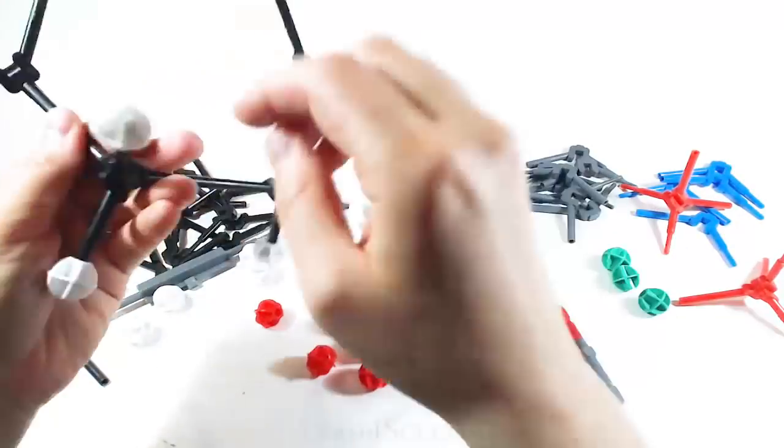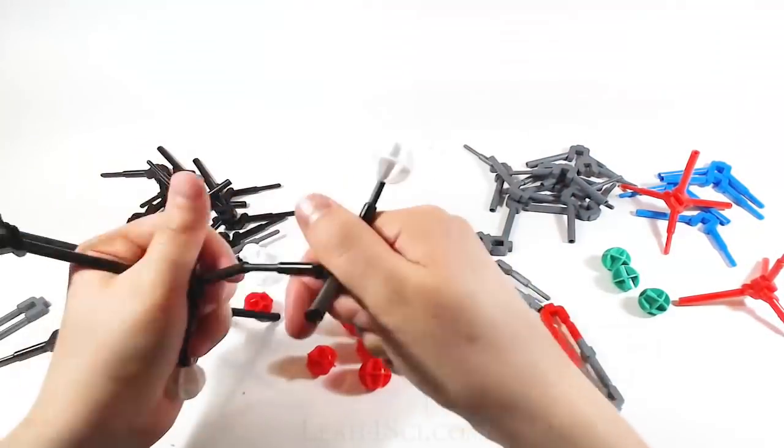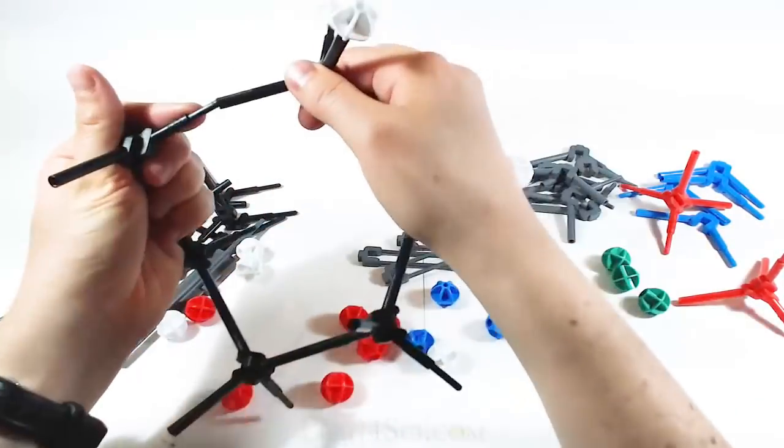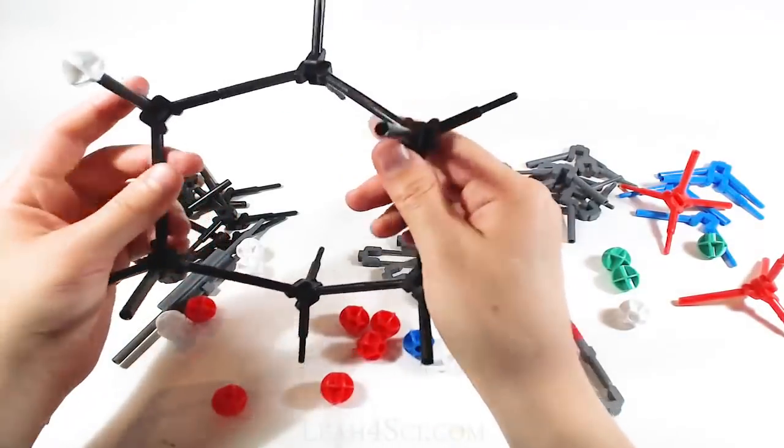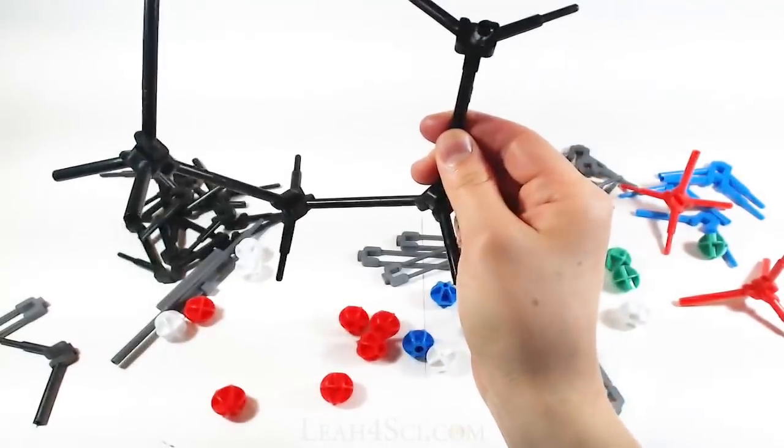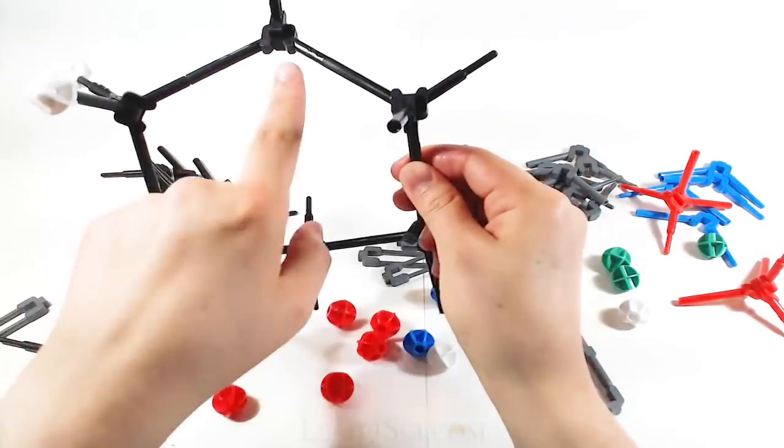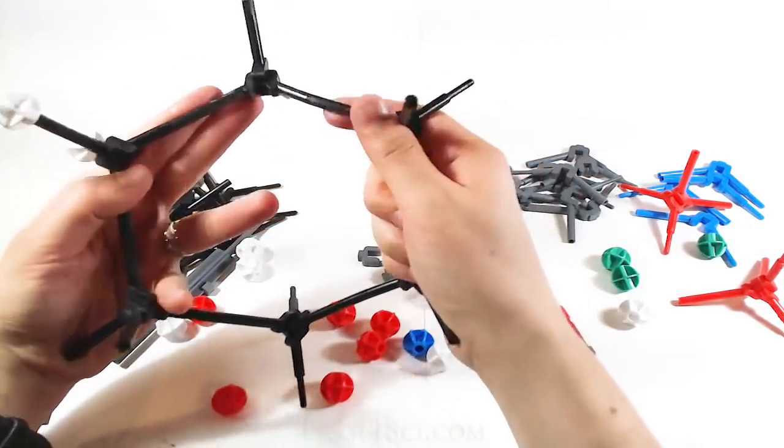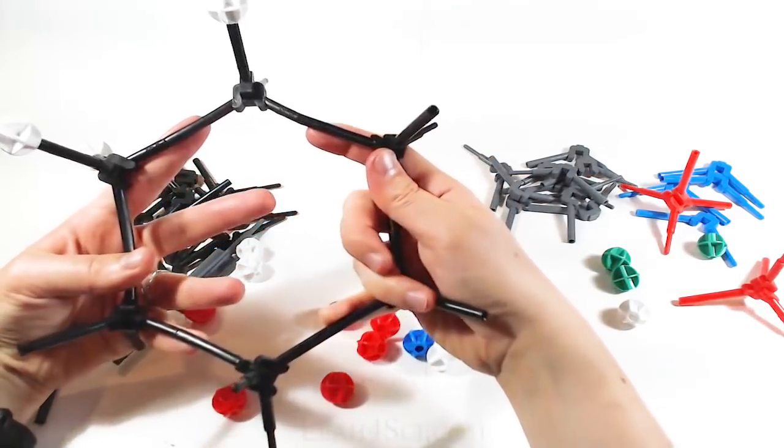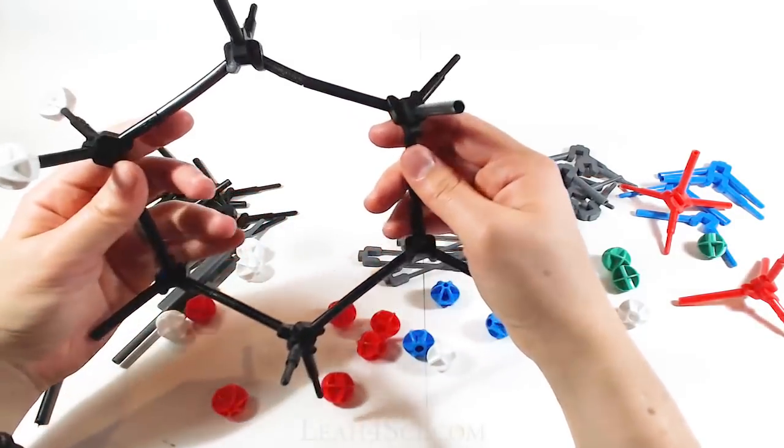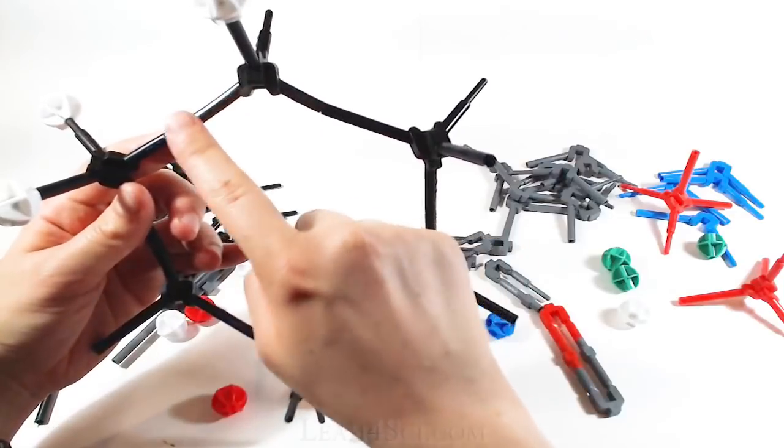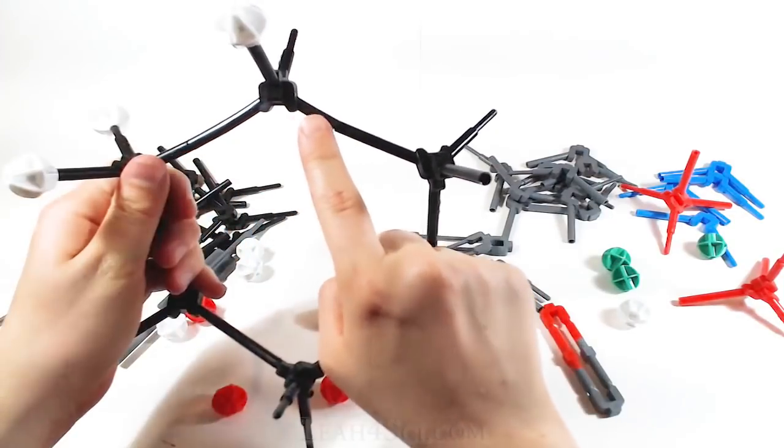The next time you want to use your kit is for chair conformations. For a chair conformation, we need six carbons and a hexagon. And this is where that flexible piece comes in handy. Because if I try to flatten it out to prove to you why the chair conformation is needed, notice that that is straining and it almost wants to break.